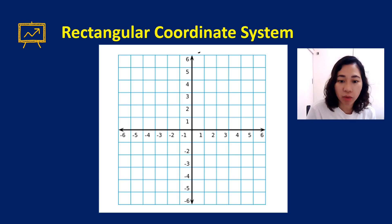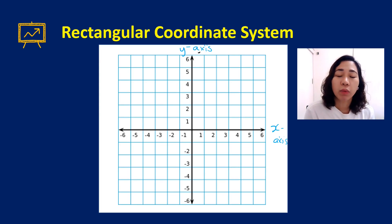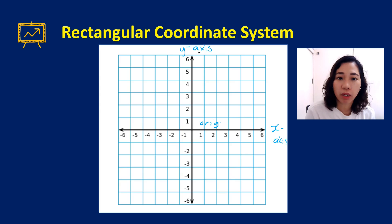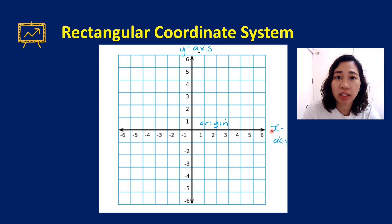The vertical line is known as your y-axis, and the horizontal line is your x-axis. The point where the two lines intersect is known as your origin.